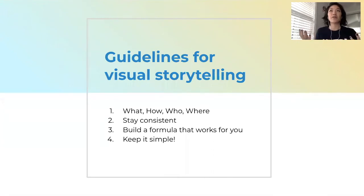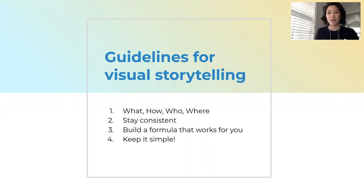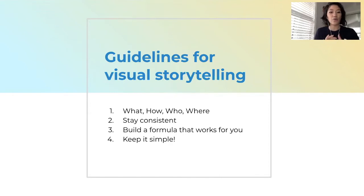My basic guidelines for visual storytelling are: first, we want to answer the questions of what, how, who, and where. When you invite somebody to a party there's also a when, but on Activity Hero we already display the when in our activity details and session boxes. So when telling your visual story on Activity Hero, we want you to answer what, how, who, and where through your photos.